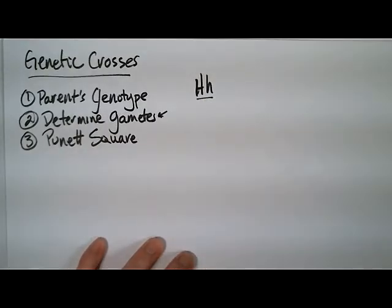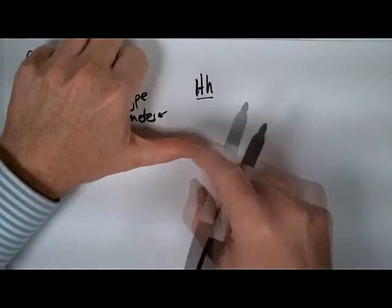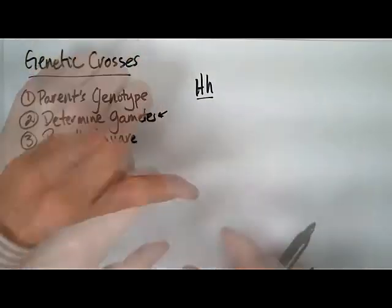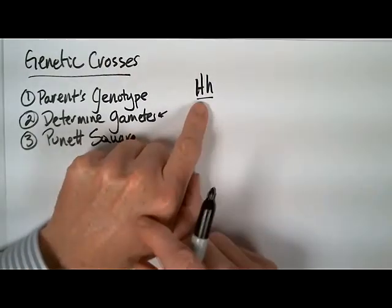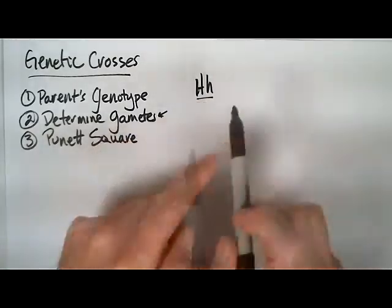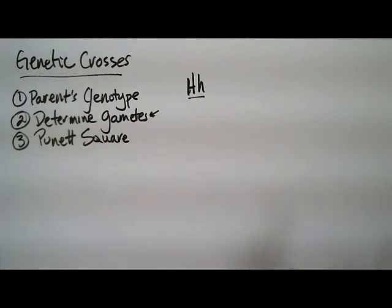If I had a parent that was big H, little h — heterozygous for this gene called Hitchhiker's Thumb, where your thumb curves back — this parent's genotype has two possible gametes that can be produced. If it was a male, there would be a sperm produced with just the big H, and then a sperm produced with just the little h. Each one of these sperm has an equal chance of making it to the egg to fertilize and produce an offspring, but it's random as to which one will actually be there.